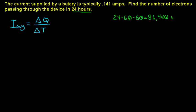So we say our I average is going to be 0.141 amps. So 0.141 amps is going to equal change in Q over 86,400 seconds.